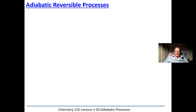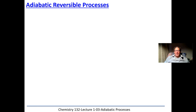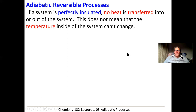Welcome everyone. This is the fourth lecture, lecture 103 on adiabatic processes. We're going to talk today about reversible adiabatic processes and how they differ from isothermal processes. In an adiabatic process, no heat can be exchanged between the system and the surroundings. An adiabatic system is one with really good insulation. It doesn't mean there's no temperature change — the system can still do work or have work done on it, changing the internal energy of the molecules.